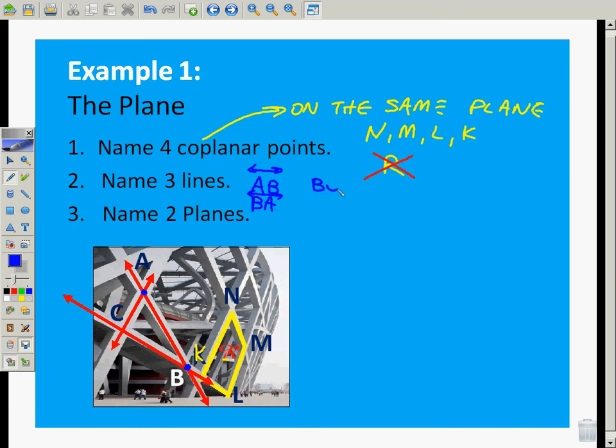Also, BC, the line, or CB, the line. And the third one is AC, the line, or CA. Notice, I've got two different names for each one, but they're the same line. So CA and AC are the same line. Remember, we've got to have that label on top.